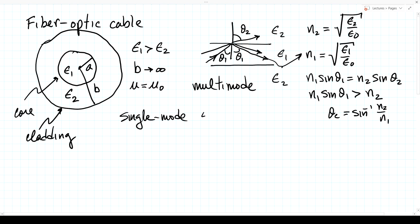With current technology, single-mode fibers can carry around 400 gigabits per second through a core that is only a few microns in radius. To understand these, we really need to drill down and do the full electromagnetics.